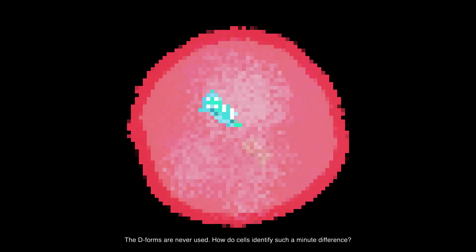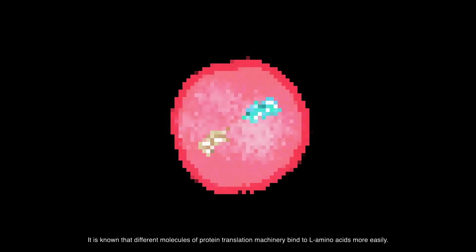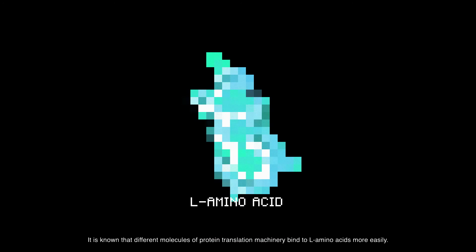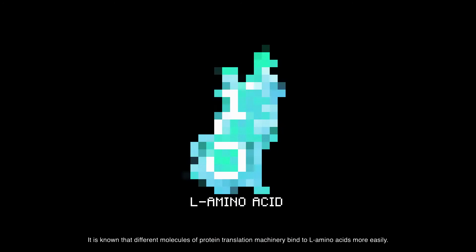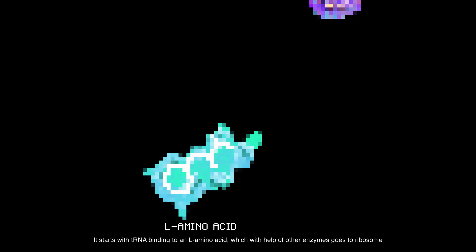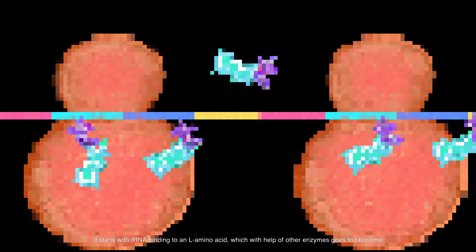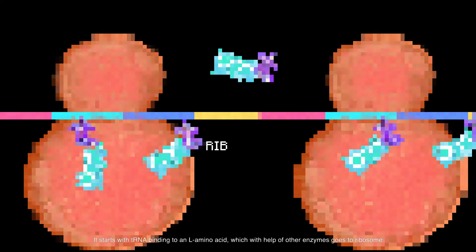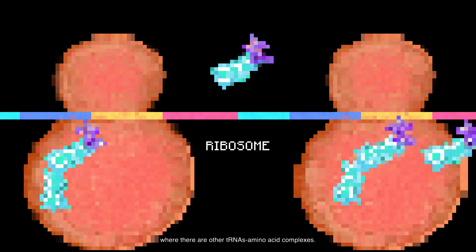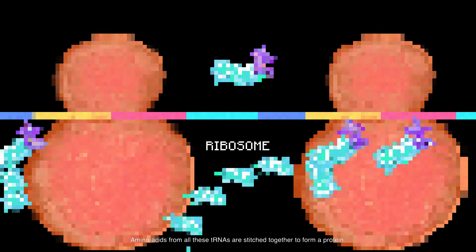How do cells identify such a minute difference? It is known that different molecules of the protein translation machinery bind to L-amino acids more easily. It starts with tRNA binding to an L-amino acid, which with the help of other enzymes goes to the ribosome, where there are other tRNA-amino acid complexes, together forming a protein.